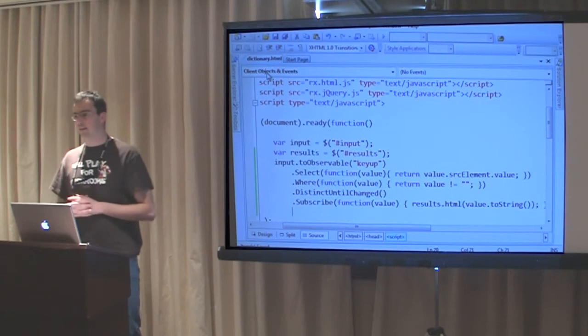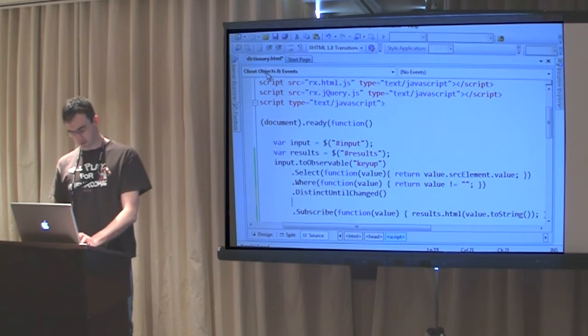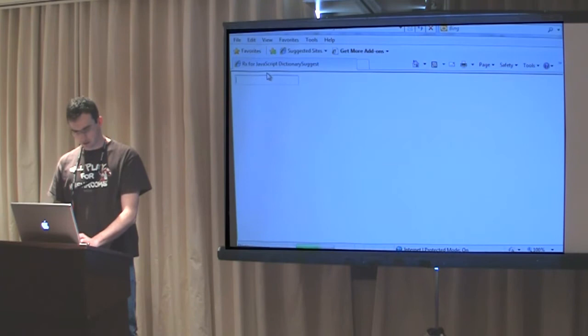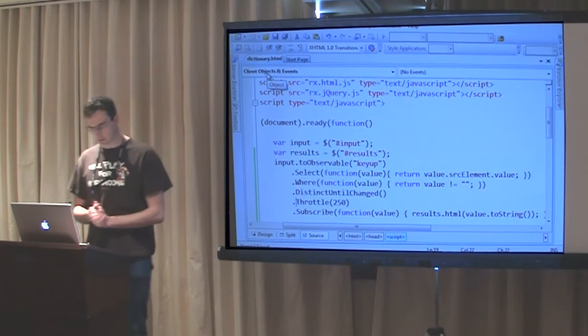Now we have the input we want. One more thing - make sure we don't fire unless the user hasn't typed for a couple milliseconds. I'm going to throttle the user's input for 250 milliseconds. Let's try this. If I type A, B, C, it shows up, but didn't show A and B in the meantime. We've tamed our input. Let's make an asynchronous request.